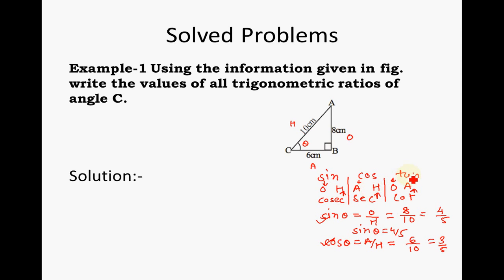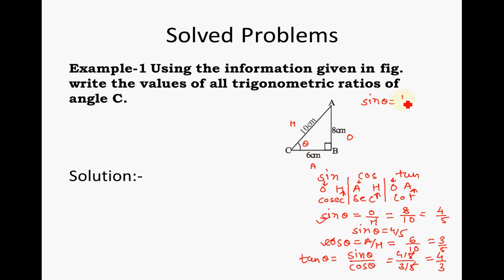Similarly, cos theta is adjacent by hypotenuse, which equals 6 by 10, that is 3 by 5. After calculating sin and cos, the rest is very easy because tan theta is sin theta by cos theta. So tan theta = (4/5) ÷ (3/5); the 5s cancel and I get tan theta equal to 4 by 3.